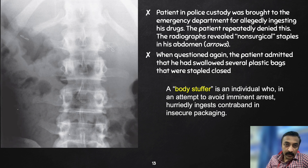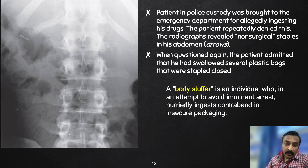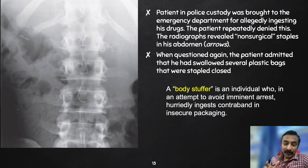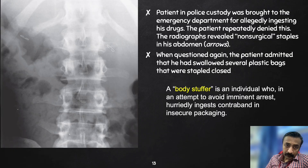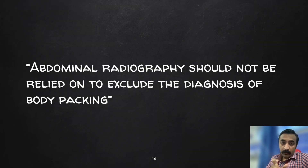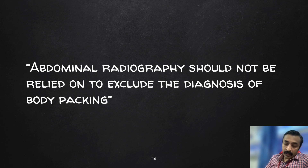This next case is slightly different — what you see here looks more like staples. This is something called a body stuffer — an individual who, in an attempt to avoid imminent arrest, hurriedly ingests contraband in insecure packages. The difference is that a body packer's packets are designed to remain in the abdomen until the destination, whereas a body stuffer hastily swallows the drug when confronted. The key message is that abdominal radiograph should not be relied on exclusively to exclude body packing — CT would remain the more definitive diagnostic tool.